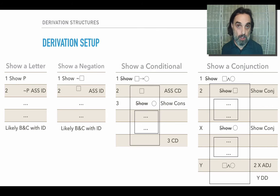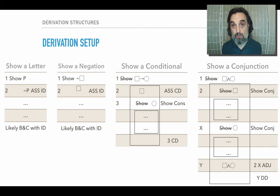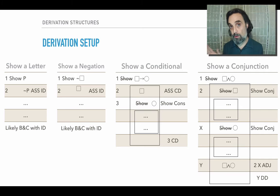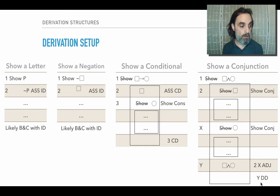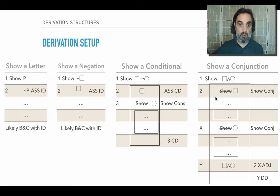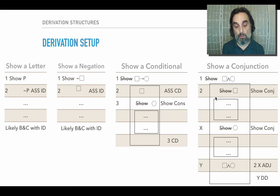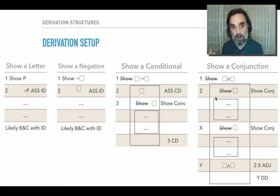What about when we're trying to show a conjunction? We know that in some cases, when we're trying to show a conjunction, we don't need to make any assumptions and we don't need to do any sub-derivations, because we've done straightforward direct derivations. But the general format here is: our first line will be show the conjunction, and we don't necessarily want to make an assumption. It would be an indirect assumption — show negation of the conjunction — and we wouldn't have much to do with that.